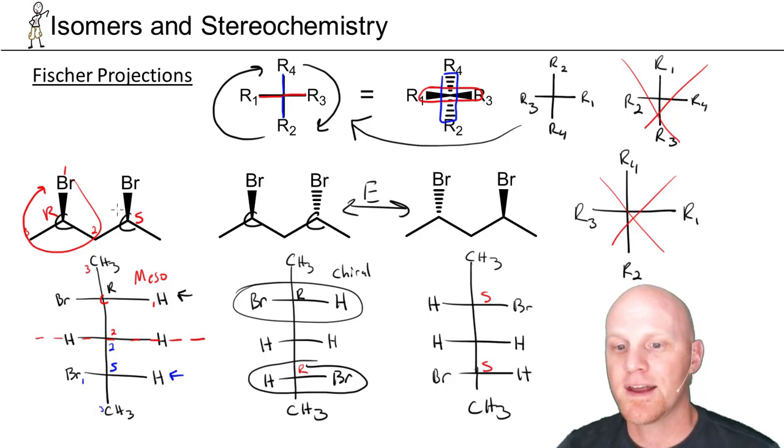I highly recommend if you're going from line angle to Fischer or Fischer to line angle, that you just assign R and S and make them match. There can be a little bit of method of madness, but it's prone with errors, especially for undergraduates. So I highly recommend just assign R and S in going from one to the other.